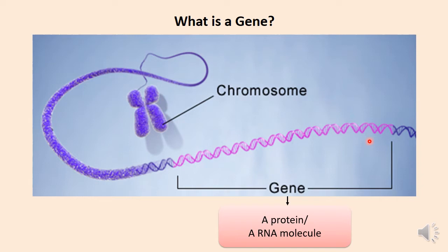For example, if this segment of DNA codes for the protein albumin, we call it the albumin gene. If it codes for a tRNA molecule, then we call it a tRNA gene.